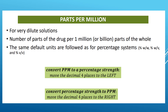These are shortcuts for converting between PPM and percentage strength. To convert PPM to percentage strength, move the decimal point four places to the left. If you are converting percentage strength to PPM, then move the decimal point four places to the right.